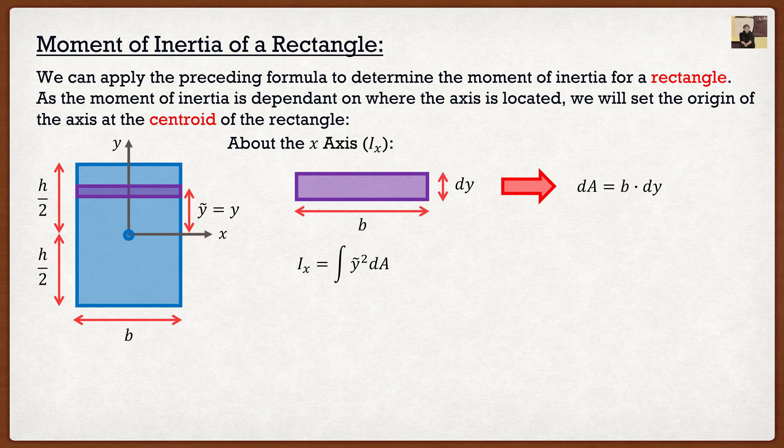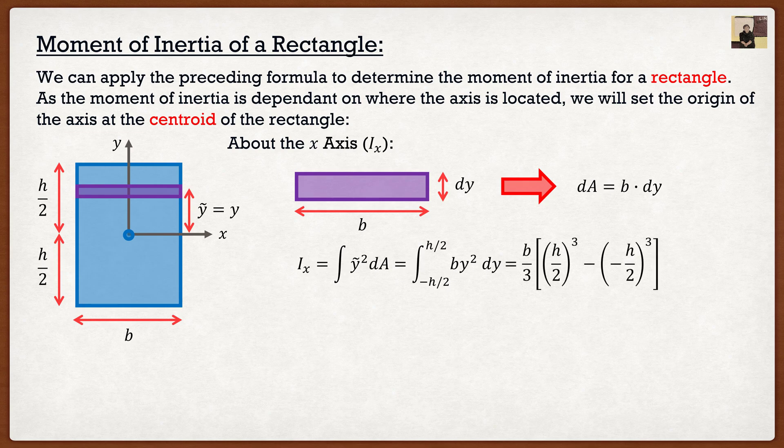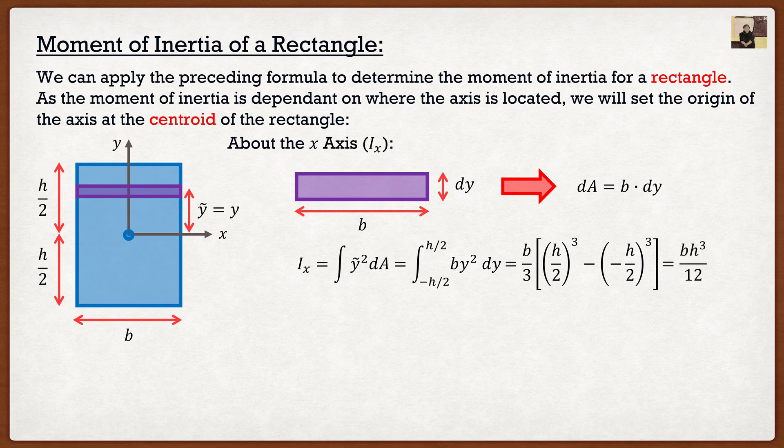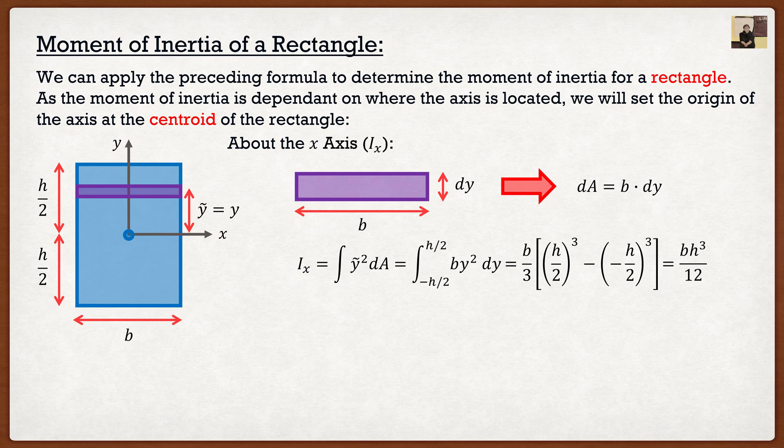So I can substitute that into my integral over here to get b times y squared, and integrate that with respect to dy, which gives me this. And then we figure out that the moment of inertia about the x axis is going to be equal to base times height cubed divided by 12. I guarantee you by the end of your engineering careers, you will have this memorized. Everyone does.